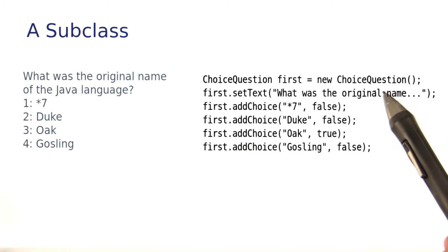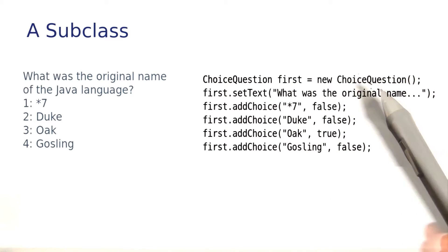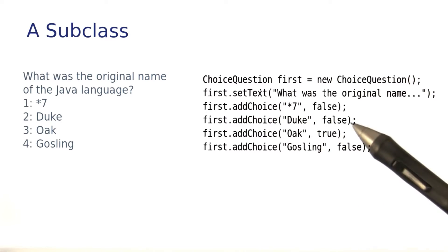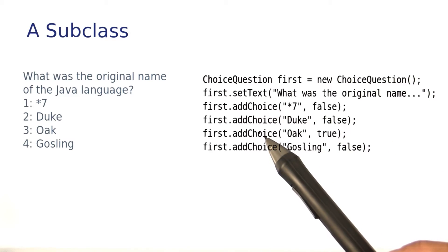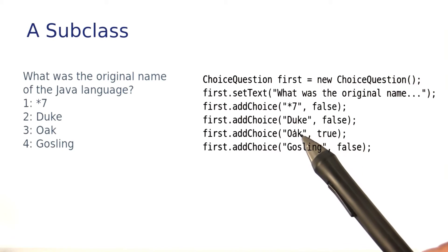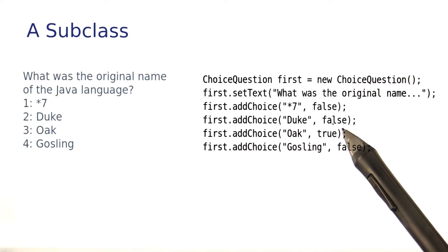We make a choice question, that's what I'm calling this class. We still need to set the text, of course, but then for the choices, I want to be able to call a method that I call addChoice, that adds a particular choice, and then specifies whether it's false or true.